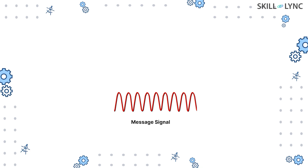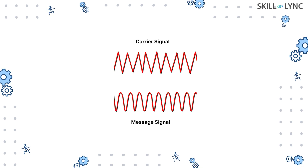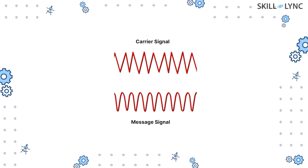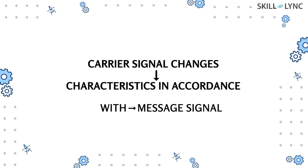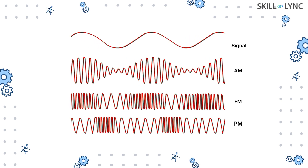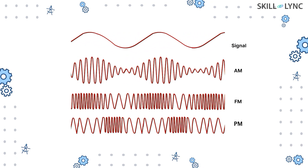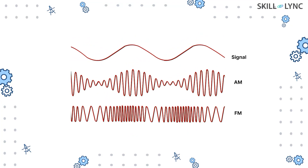Let's now discuss how the process of modulation takes place. We have two signals: the message signal and the carrier signal. The characteristics of the carrier signal are mixed with the message signal for transmission. The carrier signal itself contains no information whatsoever. The characteristics of the carrier signal that can be altered are its amplitude, frequency, and phase.